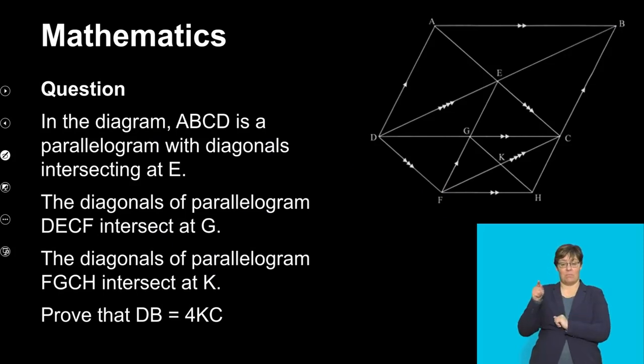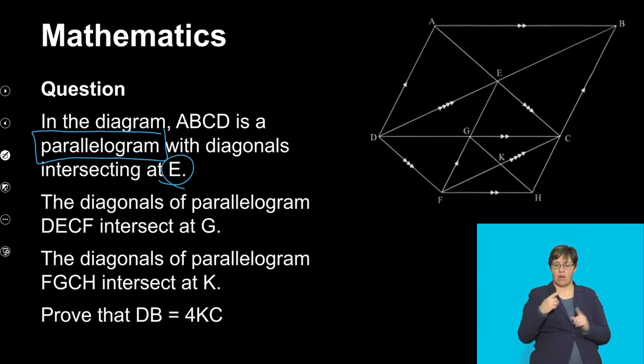Now in the diagram, ABCD is a parallelogram. There's some interesting things. There's a lot of nice things about a parallelogram. With these diagonals intersecting at E, so what does that tell me? It tells me that this will be equals to that. And then also the diagonals of parallelogram DECF intersect at G. They intersect at G, which is at that point. The diagonals of parallelogram FGCH intersect at K. So now I have actually three parallelograms here. And I'm going to highlight them with different colors.